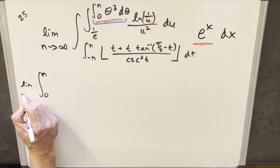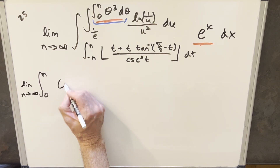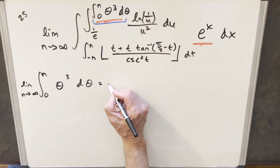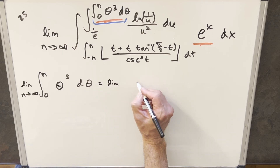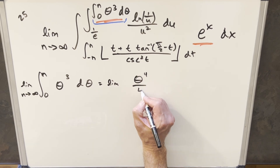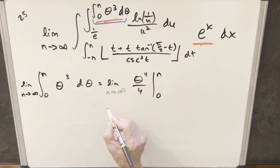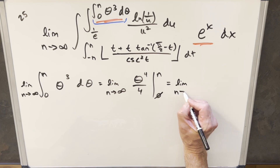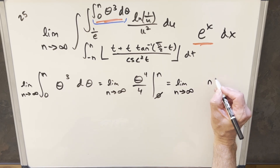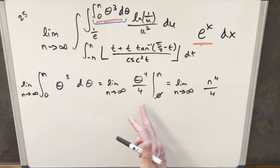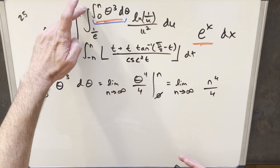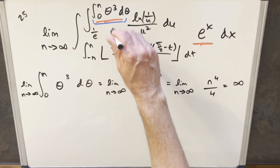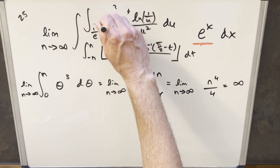We'll bring the limit inside and write: the limit as n goes to infinity of the integral from 0 to n of θ³ dθ. Using the power rule, we get θ⁴/4 evaluated from 0 to n. The lower bound gives 0, so we're looking at the limit as n goes to infinity of n⁴/4. Normally we'd say this doesn't converge, but here we're using it as an upper bound, so as a limit it goes to infinity — we can change this upper bound to infinity.